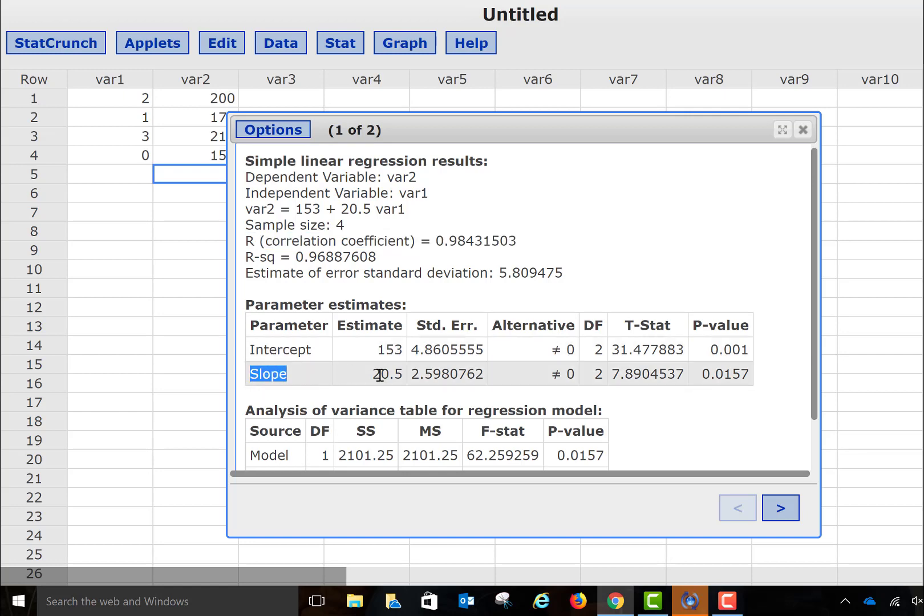But now, if we're going to use the p-value method, I want to come right down here to this column where it tells me the information regarding my slope. Now, I have my test statistic here, 7.8904. We could have gotten that value if we had done the hand computation for it, but it also shows me my p-value right here.